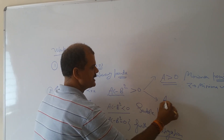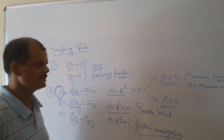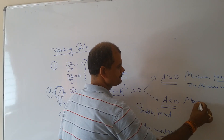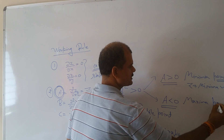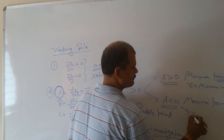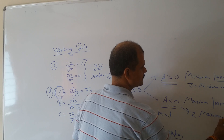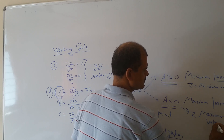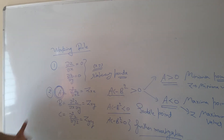And if A is less than 0, that will be your maxima point, and the corresponding z value will be the maximum value. So this is the working rule — first, find the partial derivatives and find the stationary points.